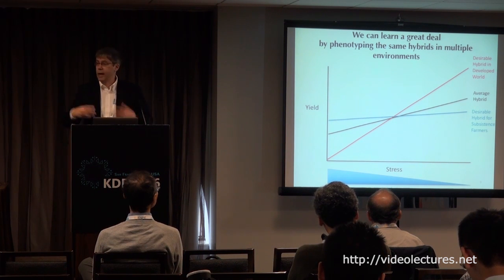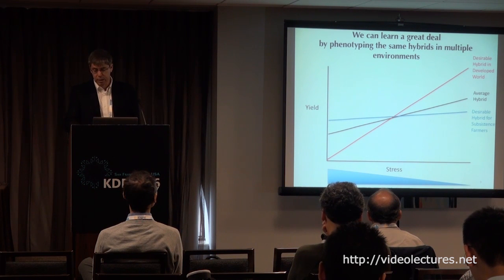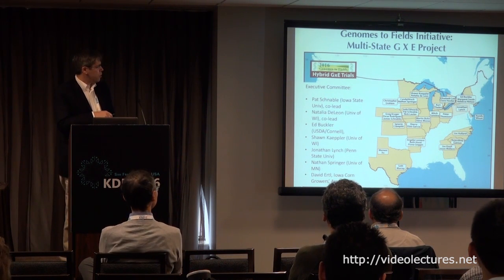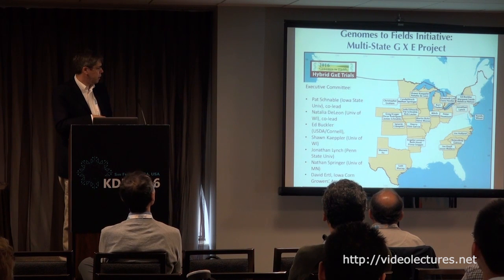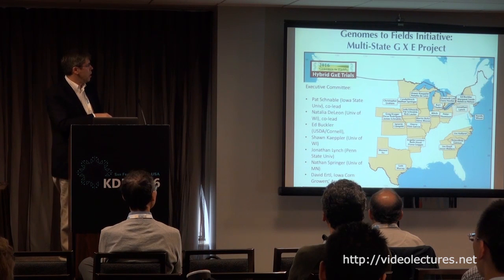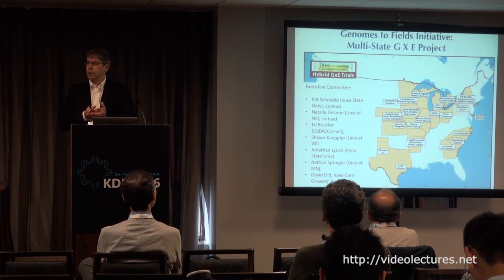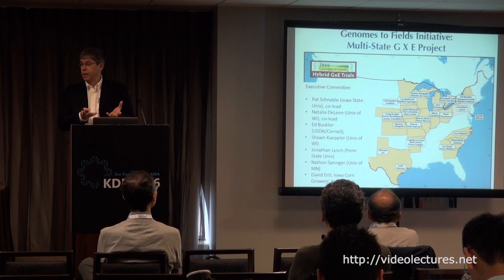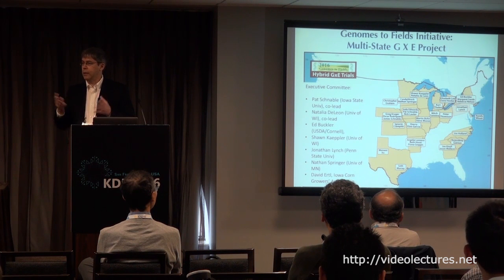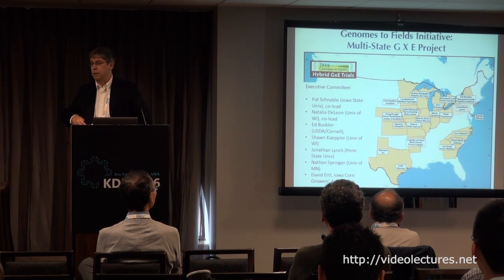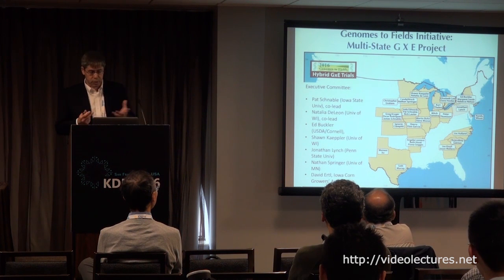We do not understand the genetics of this difference in slope among hybrids, and that's really something we need to understand in a world with increased weather variability. With colleagues, including Natalia DeLeon at the University of Wisconsin, we established the Genomes to Fields Initiative — a public sector effort to collect data from lines that have been genotyped and grown in multiple environments under standardized conditions using SOPs. We're collecting data from locations across the U.S., and to my knowledge, this is the first dataset like this available to the public.